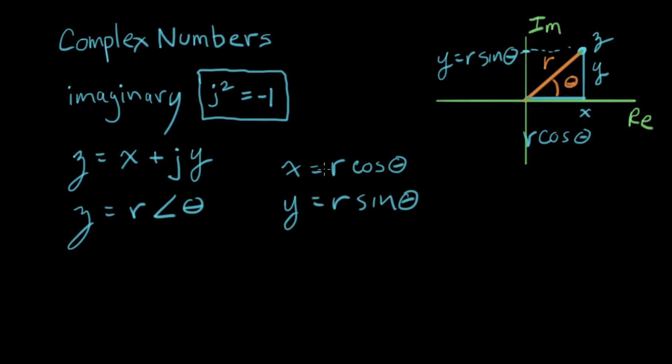So if I know r and theta, this is how I get x and y. Now let's go the other way. Suppose I know x and y, and I want to know r and theta. So r, this is a right triangle here, so I use the Pythagorean theorem. To convert from x and y to r, r squared equals x squared plus y squared.